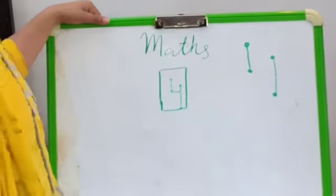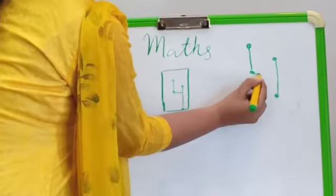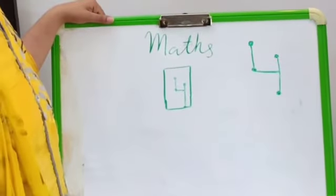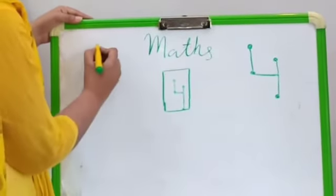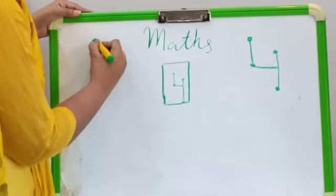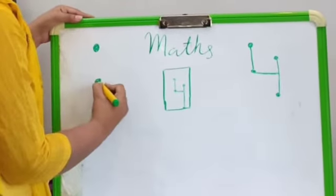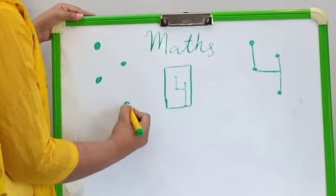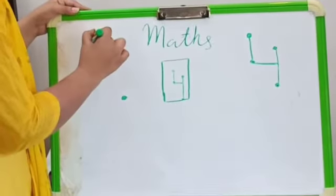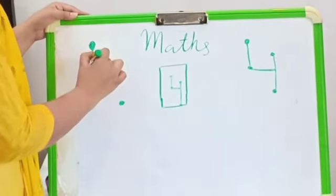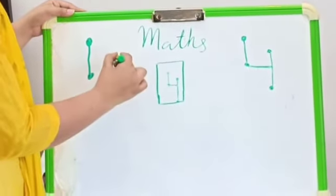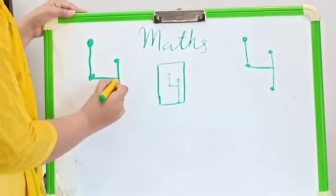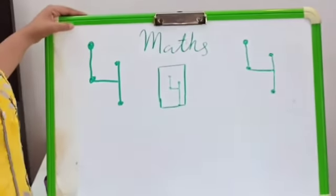And then we will join these dots, second dot, then third dot, and fourth. Now we join the dots. First of all yeh line banayenge, then yeh line banayenge, and then yeh line banayenge. So this is number four.